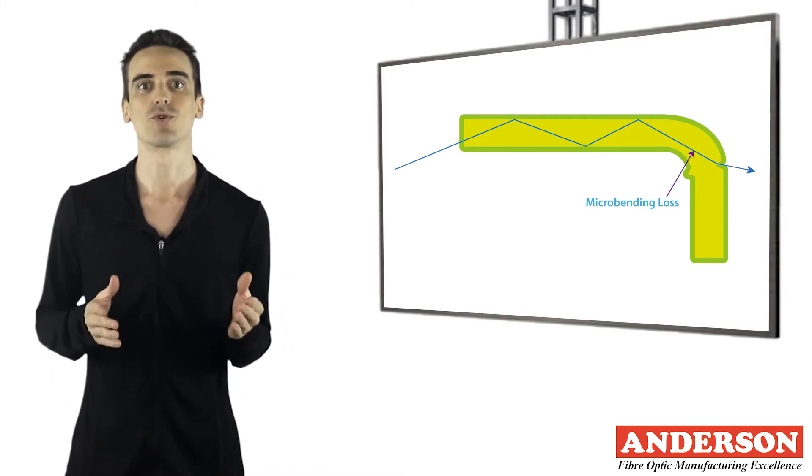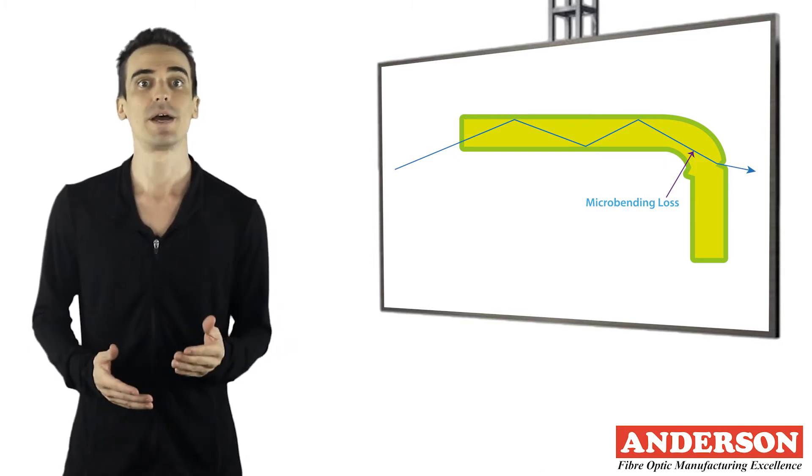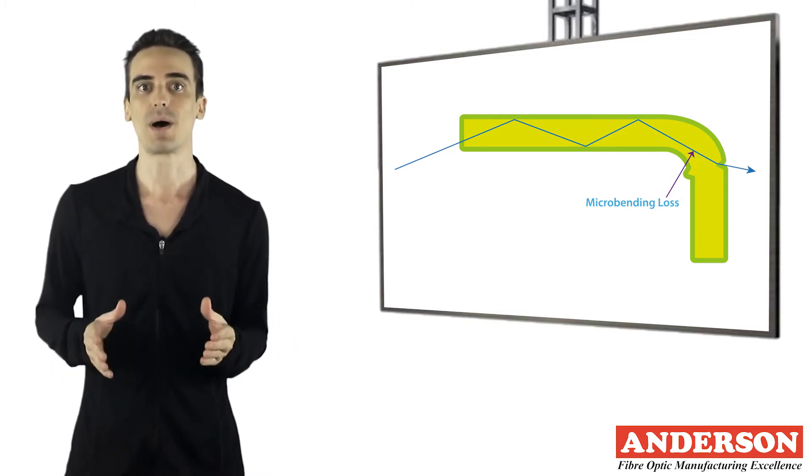Micro bending may be related to temperature, tensile stress, or crushing force. Like macro bending, micro bending will cause a reduction of optical power in the glass.